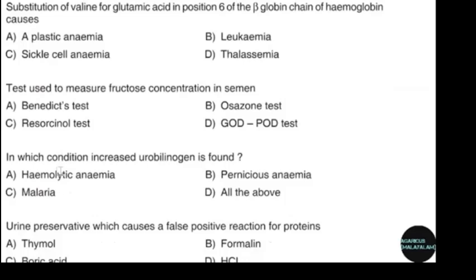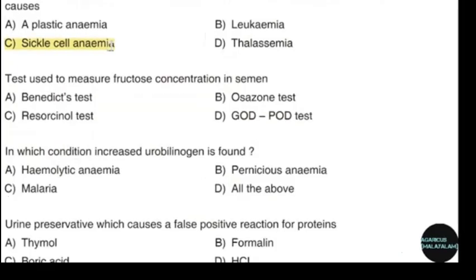Substitution of valine for glutamic acid in position 6 of the beta-globin chain of hemoglobin causes sickle cell anemia. Correct answer: option C. Test used to measure fructose concentration in semen. Correct answer: option C.